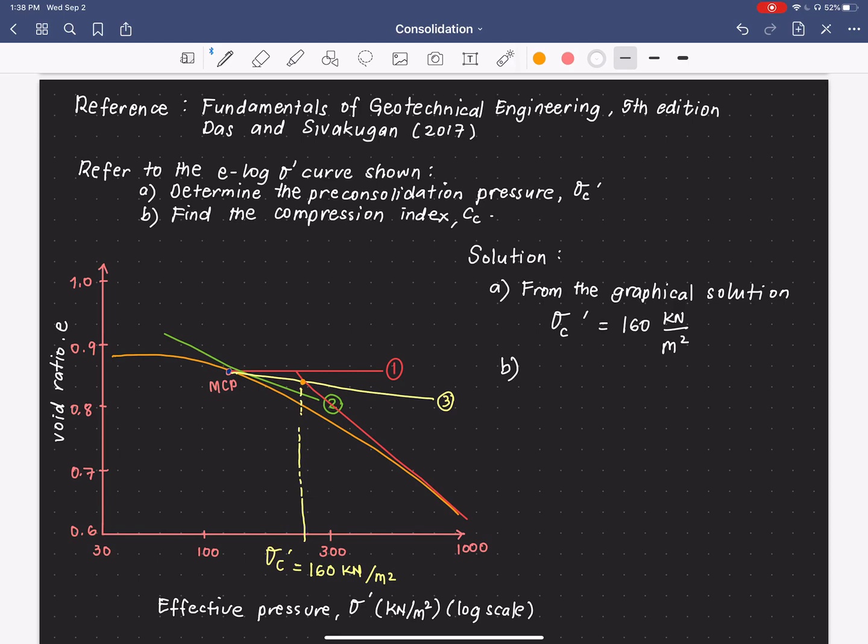So, let me give you two points here. One is this point. Let me say this is σ'2, which is 800 kilonewton per square meter.